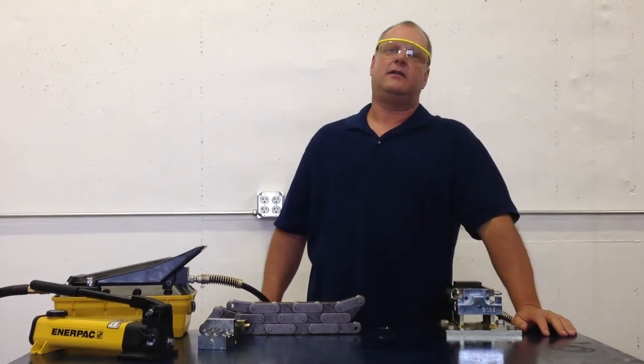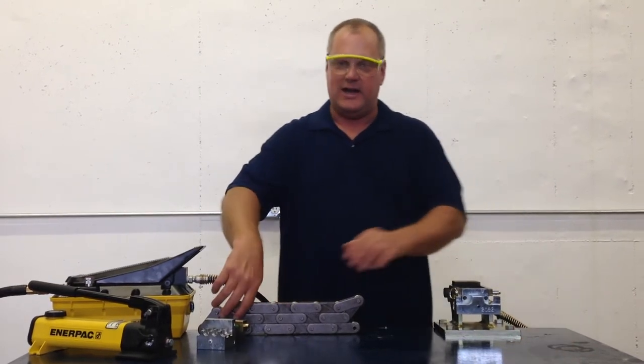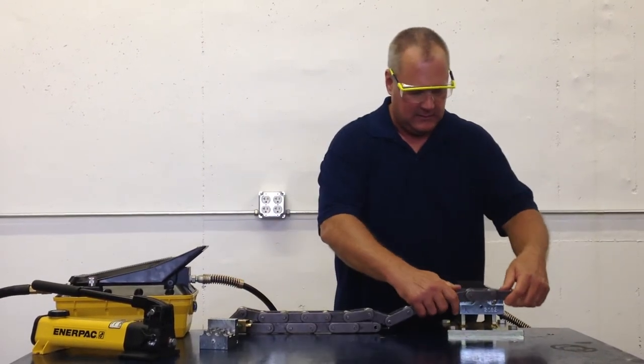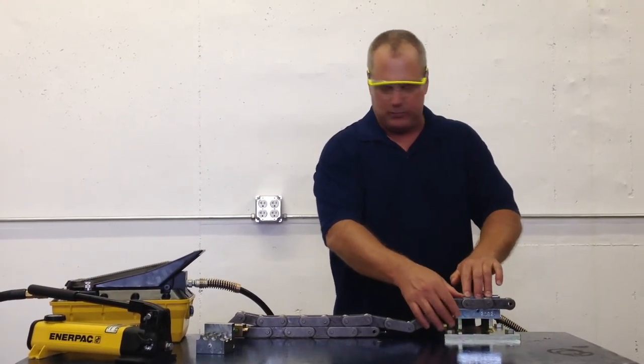The dies will cut the regular and the heavy sidebar series of chain, and cutting chain is easy. The die holds the chain like a sprocket. You just make sure that the chain is pushed down.